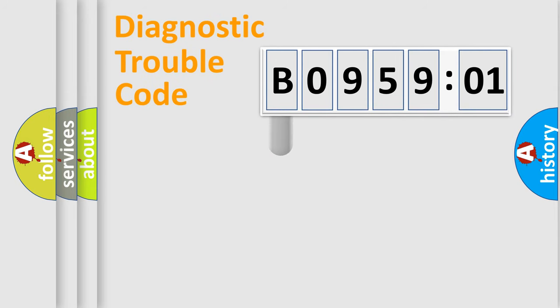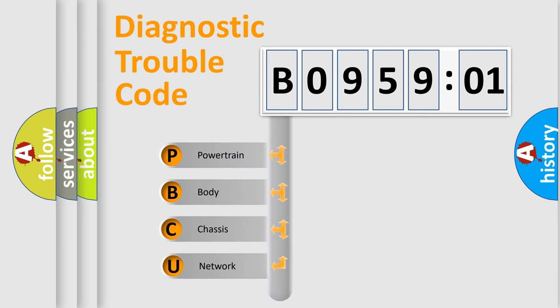First, let's look at the history of diagnostic fault code composition according to the OBD2 protocol, which is unified for all automakers since 2000. We divide the electric system of automobiles into four basic units.